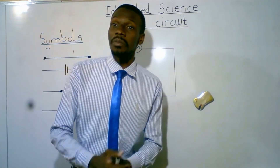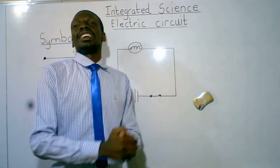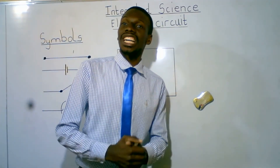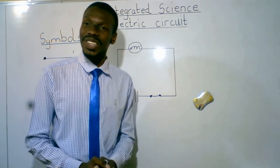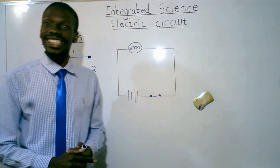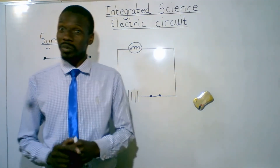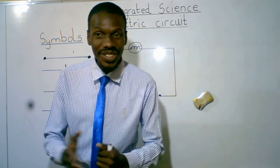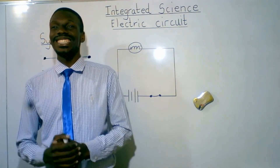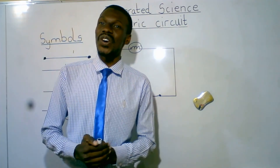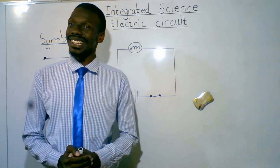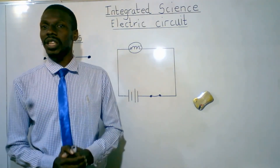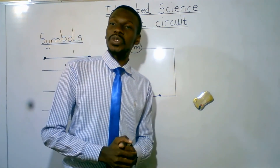I believe you can remember what a circuit is and the symbols of a circuit. A circuit is the path in which current flows. A simple circuit should have a connecting wire in which current flows, a cell — the combination of two or more cells we call a battery, and a cell is the source of energy in a circuit. We've also got a switch; the function of a switch is to open and close the path. That's it for today. God bless.